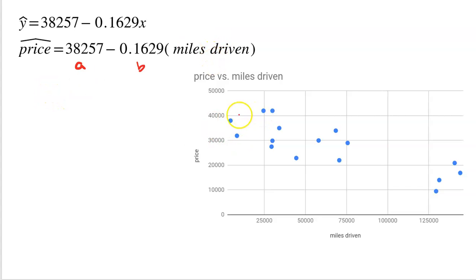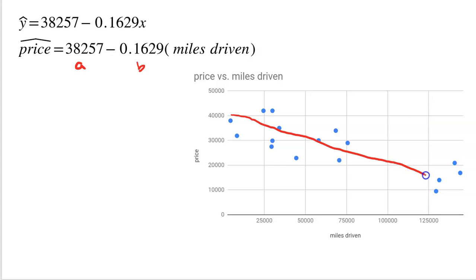What we did to find that linear regression model was we ran a line of best fit through the data, but we don't really call it a line of best fit anymore — we call it the linear regression model.